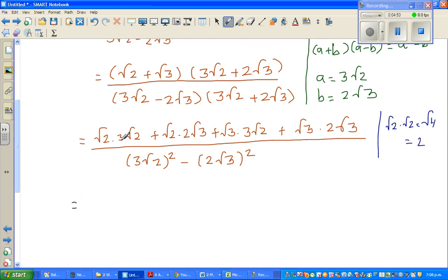So this becomes, this is 3 times 4, which is 12, plus this is root 2 times root 3 is root 6, so this is 2 root 6, plus this is 3 root 6, because root 3 times root 2 is root 6. And root 3 times root 3 is 3 times 2 is 6.